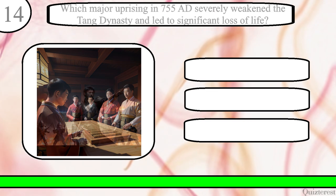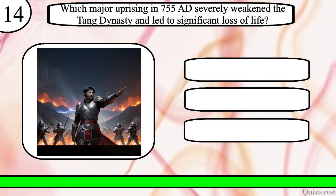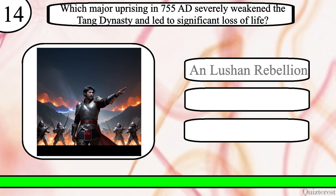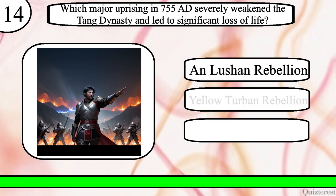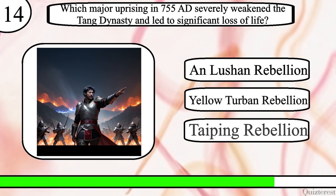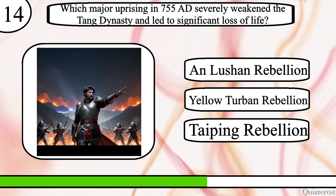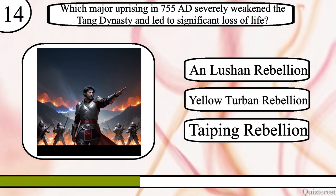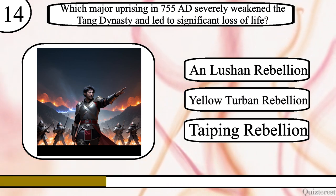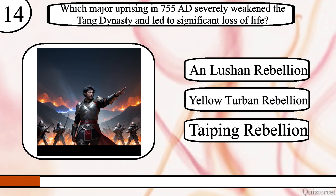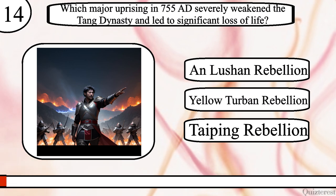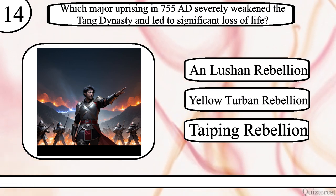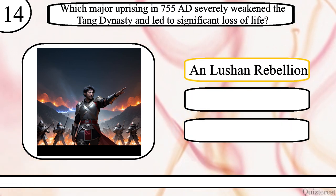Question 14. Which major uprising in 755 AD severely weakened the Tang dynasty and led to significant loss of life? An Lushan Rebellion, Yellow Turban Rebellion, or Taiping Rebellion? The correct answer is An Lushan Rebellion.